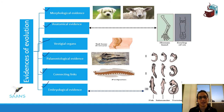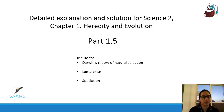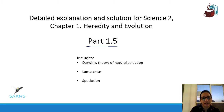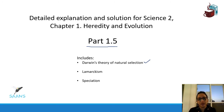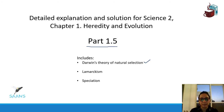All of these evidences say that we have evolved and our origin is the same. Now let's move on to the next part: Part 1.5 — a detailed explanation for Science Chapter 1, Heredity and Evolution, for Grade 10. We're going to deal in detail with Darwin's theory of natural selection. If you remember from Part 1.1, we dealt with the theory of evolution and how gene mutations are one reason evolution has occurred.